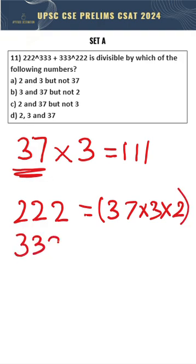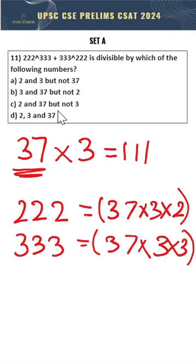For 333, you can write it as 37 times 3 times 3. From here on, the decoding is pretty simple. We just have to find if the following numbers will be divisible by 2, 3, and 37.